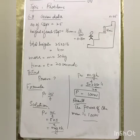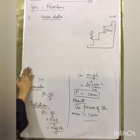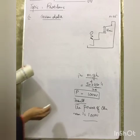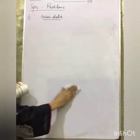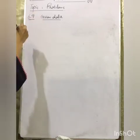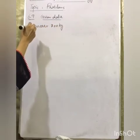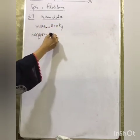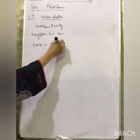Problem 6.9 — a very important numerical. Calculate the power of the pump which can lift 200 kg of water through a height of 6 meters in 10 seconds. Given data: mass equals 200 kg, height equals 6 meters, time equals 10 seconds.